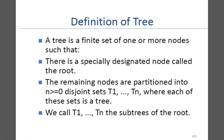Hello students, we will start discussing trees today. Before looking at trees, let us recollect the classification of data structures. We classified data structures into two categories: primitive data structures and non-primitive data structures. Under primitive data structures we have basic data types such as integer, character, float, double, etc. Under non-primitive data structures we had two more classifications: linear data structures and non-linear data structures.